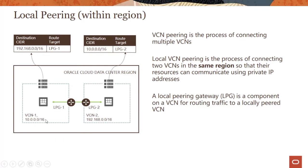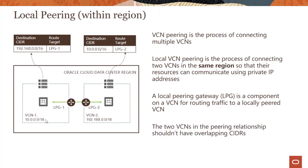So the traffic goes to the other VCN — pretty logical. The other thing you need to do, which is not on the slide, is you also need to open the virtual firewalls so you can let the traffic into this VCN from the other VCN and vice versa.